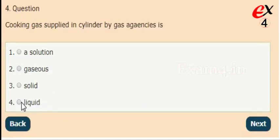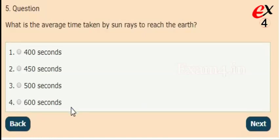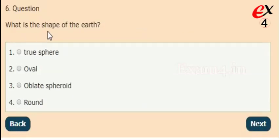The right answer is option 4, in liquid form. Next: what is the average time taken by sun rays to reach the Earth? Options: 400 seconds, 450 seconds, 500 seconds, 600 seconds. The right answer is option 3, 500 seconds.